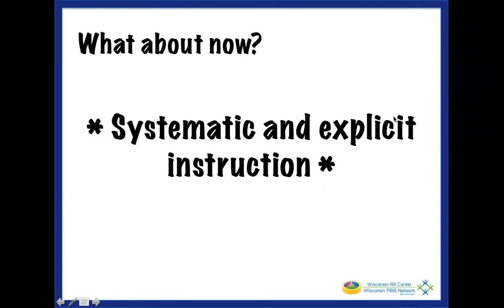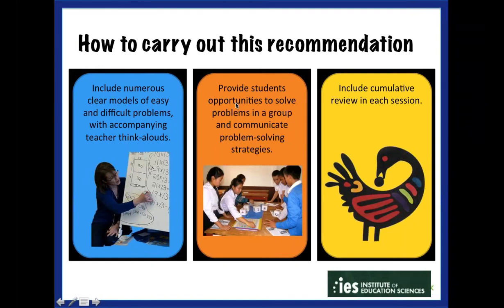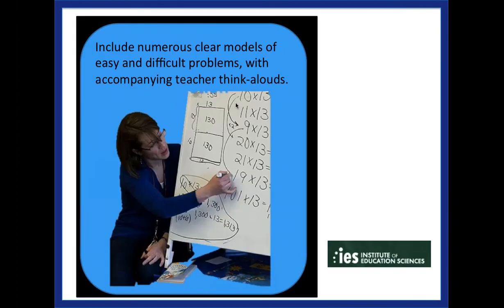We wanted you to connect back to those words and phrases you wrote down at the beginning of the webinar, to see if you have some new ideas or new thinking emerging. The IES Practice Guide gives guidance on carrying out this recommendation for explicit and systematic instruction. The first implementation suggestion is to ensure that intervention instruction includes numerous clear models of easy and difficult examples of concepts you're working to develop. These models should be accompanied with teacher think-alouds — teachers make their thinking processes public as they model strategies and processes while linking to the reasoning behind them and to the underlying mathematics.